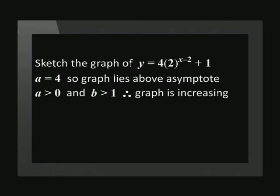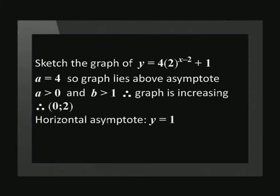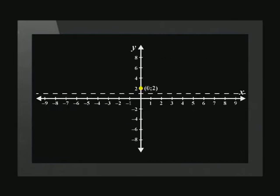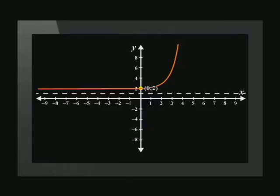Just to recap: we know that the graph lies above the asymptote and is increasing. It has a y-intercept of (0, 2) and a horizontal asymptote of y equals 1. It also has no x-intercept. We plot the coordinates of the y-intercept and draw in the line y equals 1. The asymptote must be drawn as a dotted line to show that the line does not form part of the graph. We know the graph lies above the asymptote and is an increasing function, so we can draw the graph in.